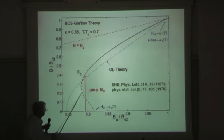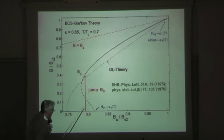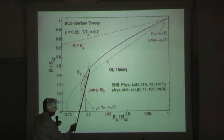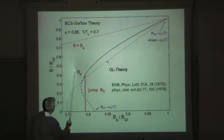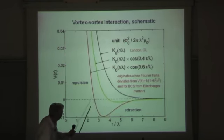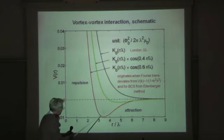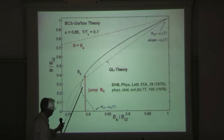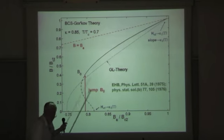You get this jump from a Maxwell construction—this area and this area have to be the same. This jump means when you increase the applied field, first no vortices penetrate, and then suddenly they penetrate to a finite density. There is no equilibrium state with large vortex distance, but immediately they jump to some equilibrium induction B₀, which corresponds to a vortex distance at this minimum where the vortices sit in the potential minimum with respect to the neighboring vortices.